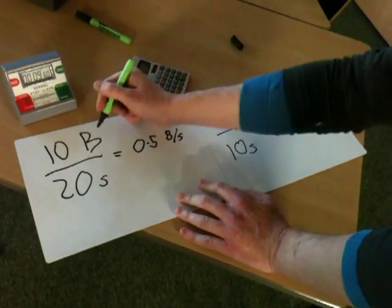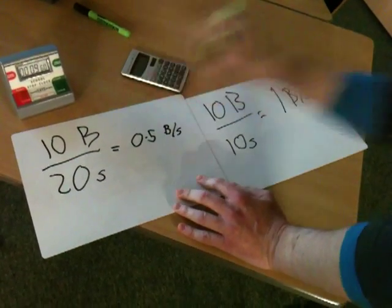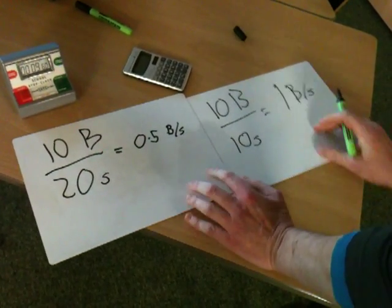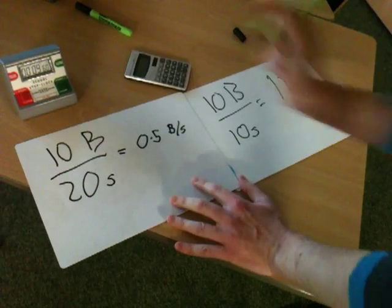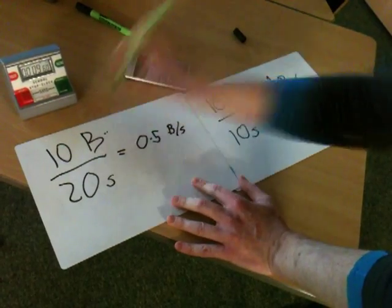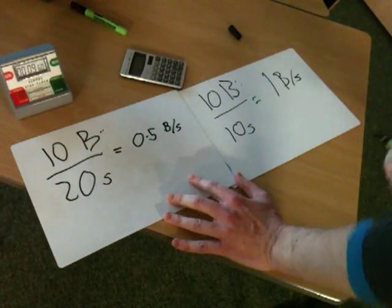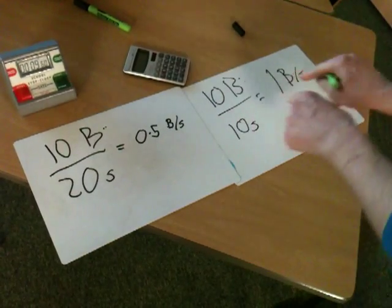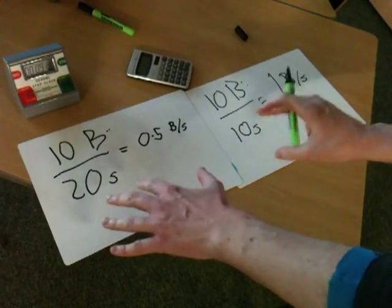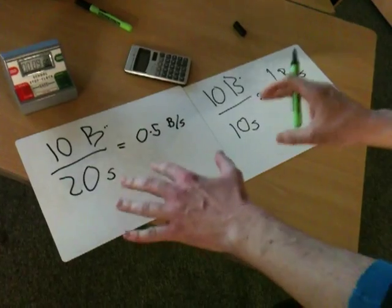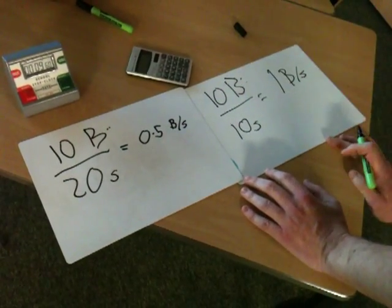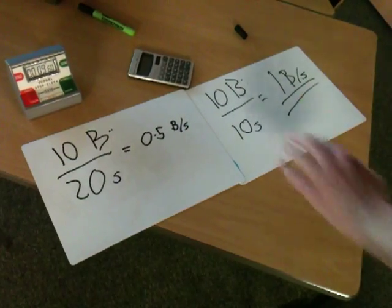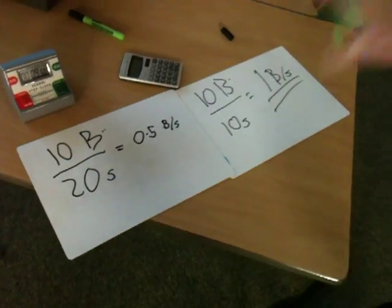So the total number of balls transferred was the same, but the time it took was shorter. So what we would say is, if we were talking about energy, we'd say the same total amount of energy has been transferred — the balls are representing energy — but we were more powerful the second time because it took us less time to transfer the total amount of energy. But still, one ball per second is not very powerful.